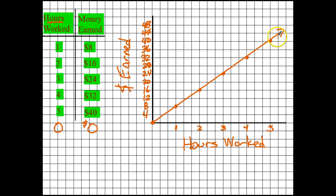Because this line is a straight line that starts at zero, zero, what happens is for every hour I work my money goes up eight dollars. Therefore, this is a proportional relationship — this is a proportion. For every one hour, it goes up eight. So if I wanted to express this, because it goes over one and up eight, I can write this as a unit rate.